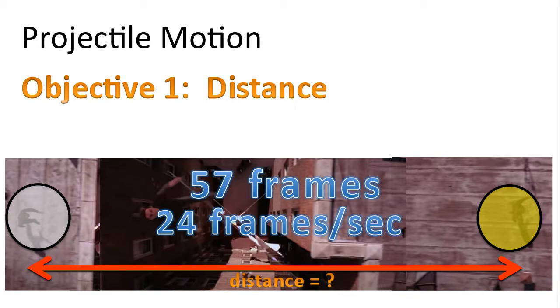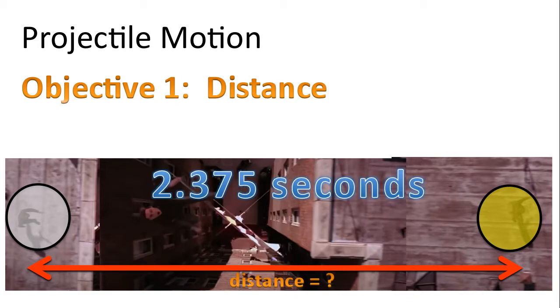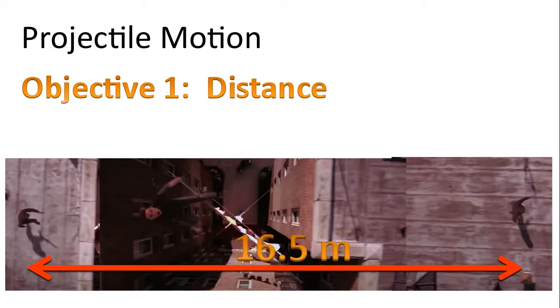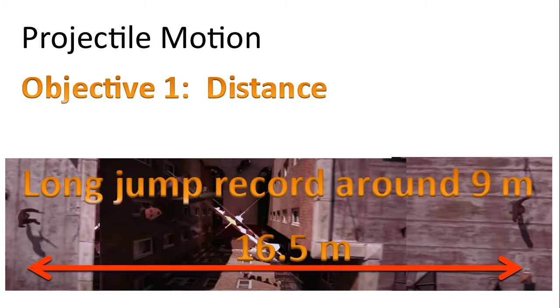This specific video was recorded at 24 frames per second. So doing some math we end up with 2.375 seconds. That's spider-man's time of flight. And so multiplying we end up with a distance of 16.5 meters. The long jump record is only around 9 meters.